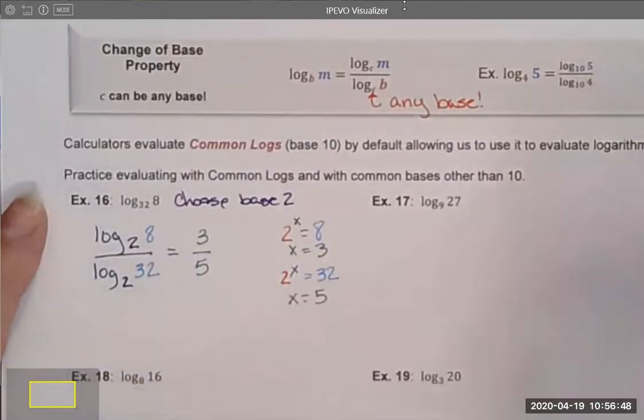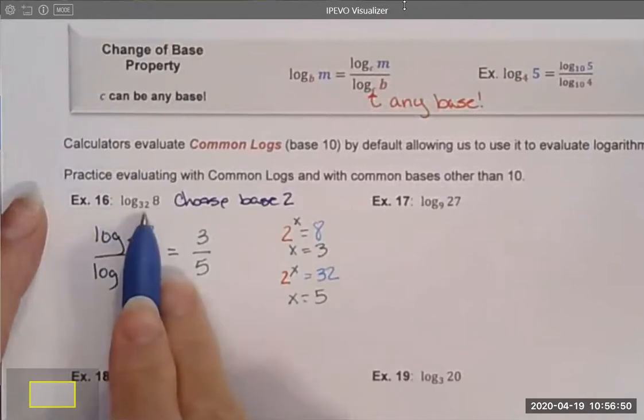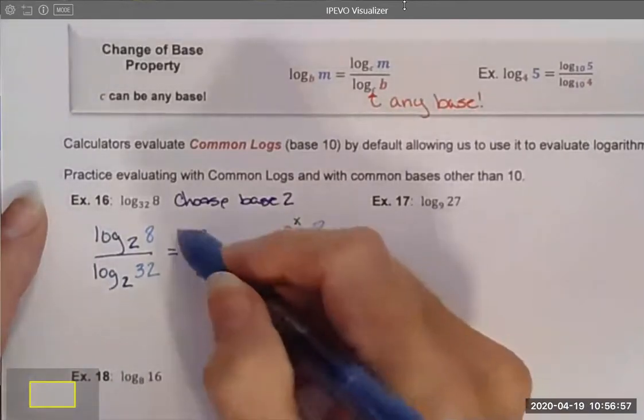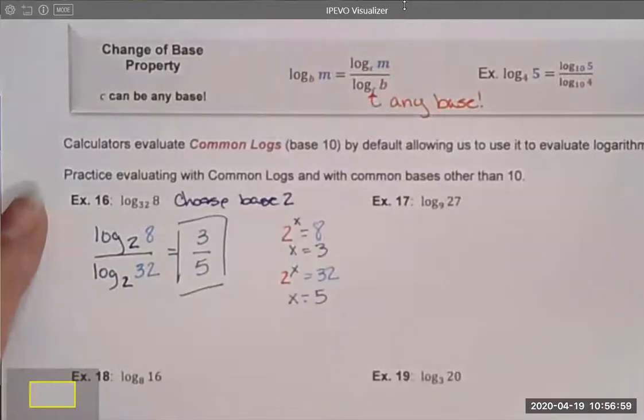And what I've done is I've figured out that 32 raised to the three-fifths power is equal to 8. That's something I can't do in my head. I can't see it right away. And the change of base formula and property allows us to calculate that a little bit easier.